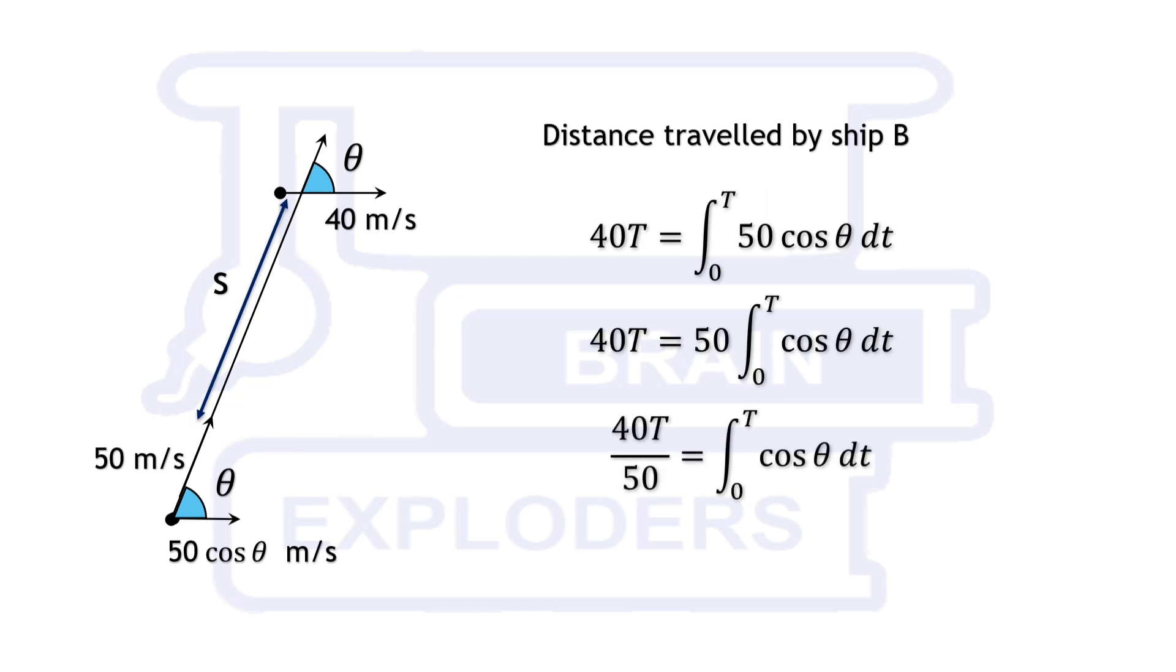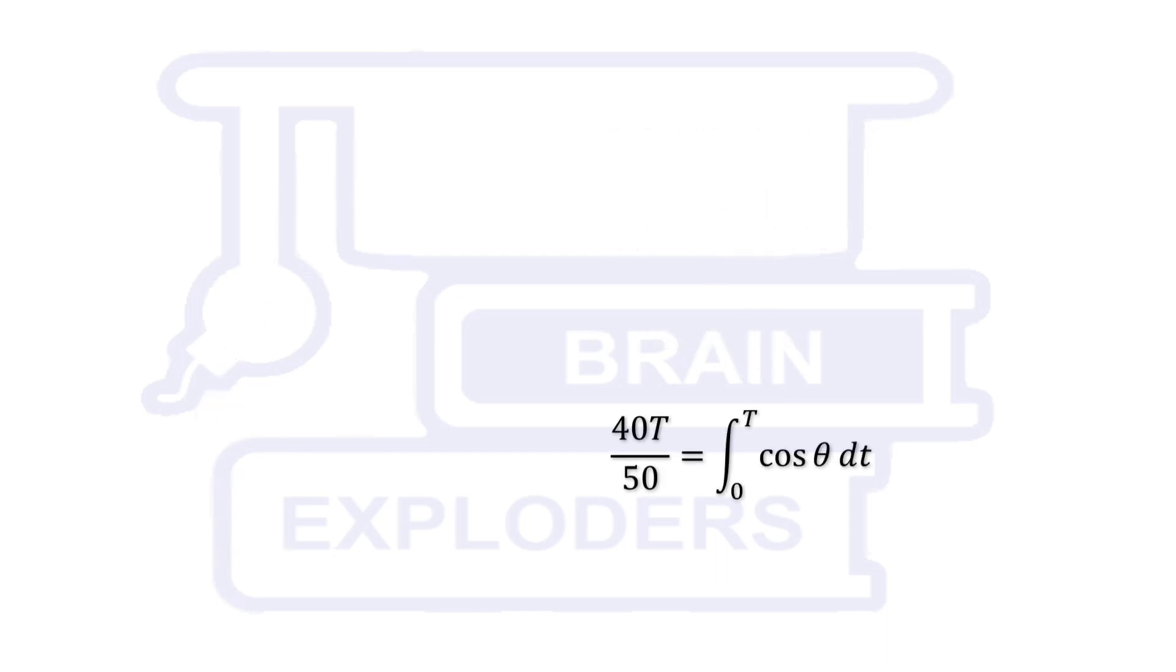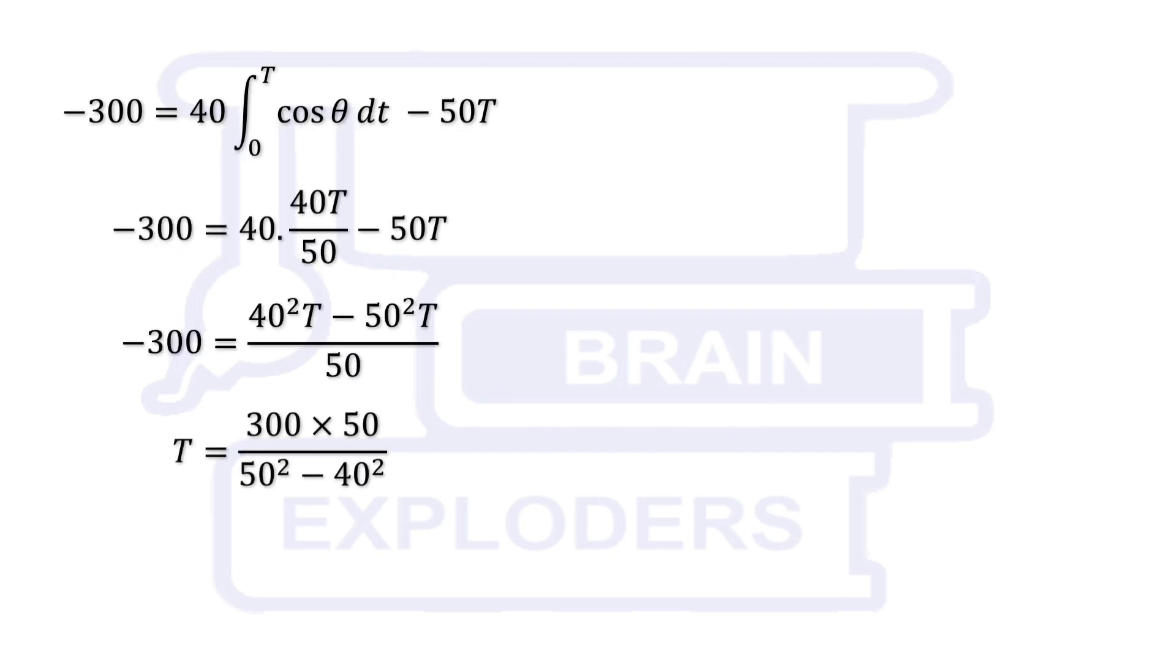Here we find the same integral again. We cannot integrate it, but this time we can substitute it in the previous equation. On substituting and rearranging the terms, we get t equals to 300 times 50 over 50 squared minus 40 squared.